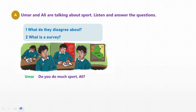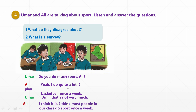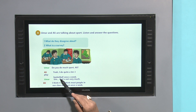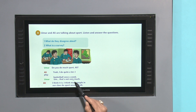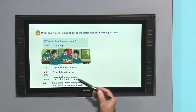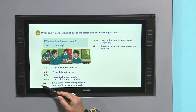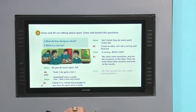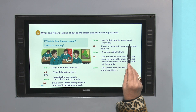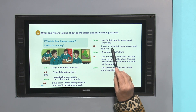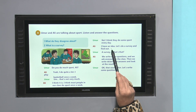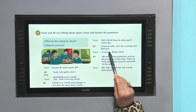Omar asks: 'Do you do much sport, Ali?' Ali replies: 'Yeah, I do quite a lot — I play basketball once a week.' Omar says: 'That's not very much.' Ali disagrees: 'I think most people in our class do sport once a week.' Omar replies: 'No, I think they do some sport every day. I have an idea — let's do a survey and find out.'